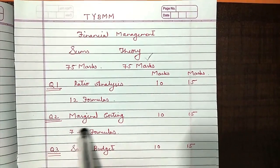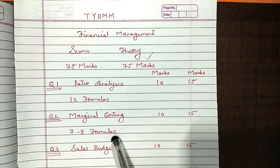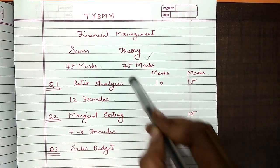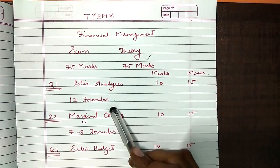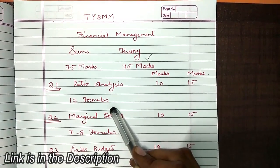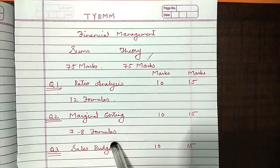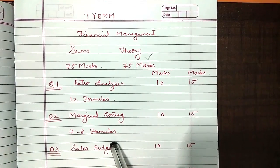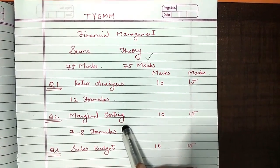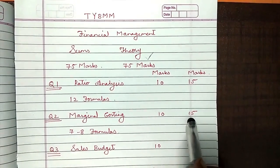The next question will come from marginal costing, which also has 7 formulas. I will provide you a link from which you can study all the formulas. In marginal costing, again you have 7 to 8 formulas — for each formula you get 1 mark. So with those 7 to 8 formulas and simple plus and minus, you can easily score a minimum 10 marks and a maximum 15 marks.